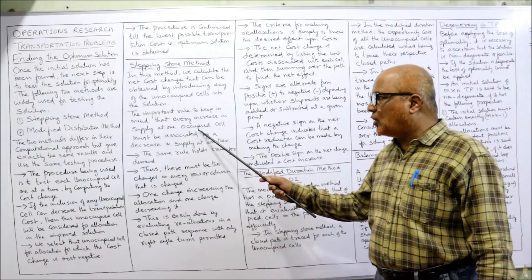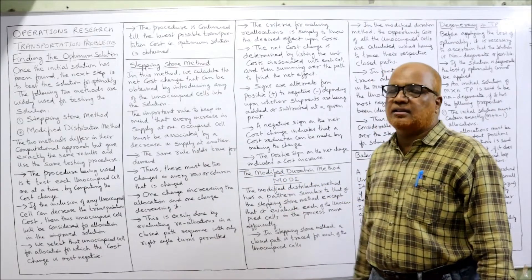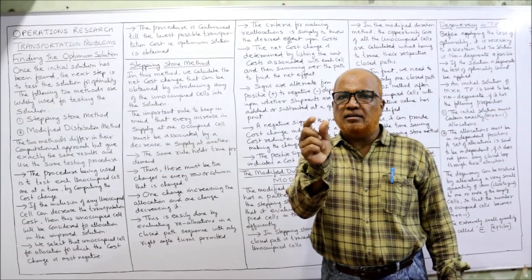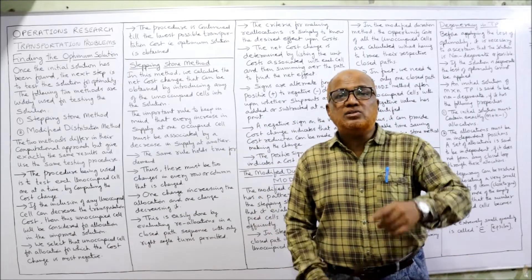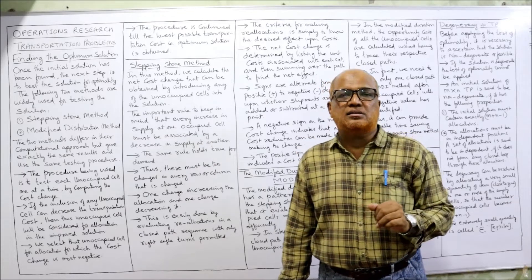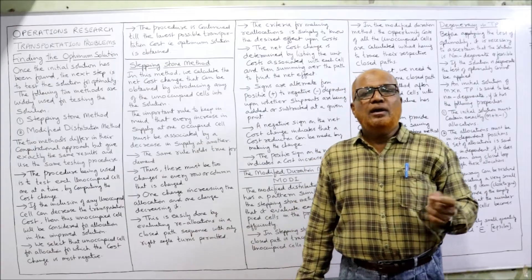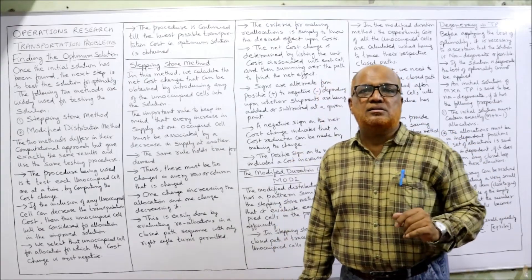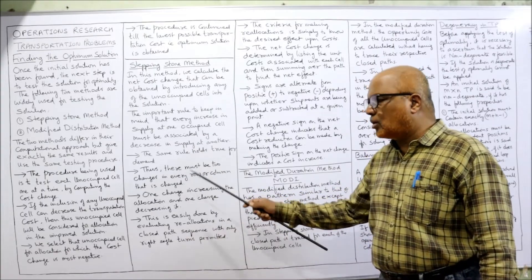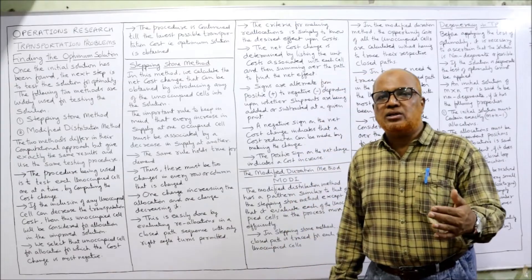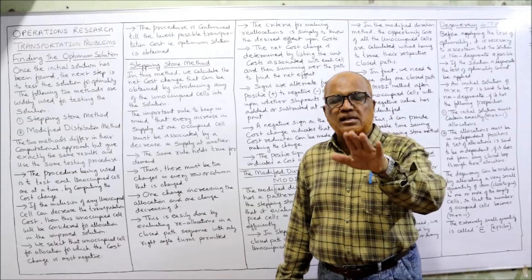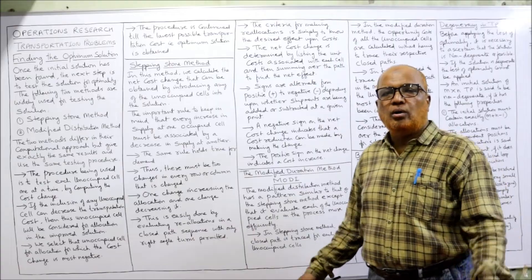An important rule to keep in mind: every increase in supply at one occupied cell must be associated with a decrease in supply at another. When we change allocations, if supply of one cell increases, the supply of another cell must decrease. The same rule applies to demand: if one cell's demand increases, another cell's demand must decrease. Thus there must be two changes in every row or column that is affected.